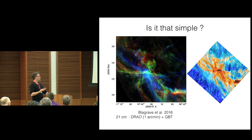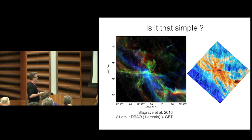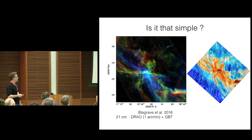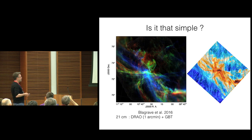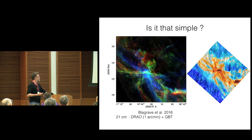But is it really that simple — diffuse ISM is parallel, molecular cloud is perpendicular? I don't think so. This is an H1 observation obtained with the GBT at one arcminute resolution. The three colors represent three velocity channels, and in this high-latitude field with filamentary structure in very different directions, the polarization angle indicates a global field direction. Even in this high-latitude field where the column density is about 10²¹, you have parallel and perpendicular coexisting. So it's not that simple.